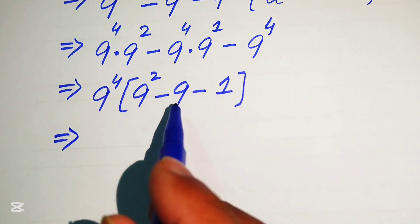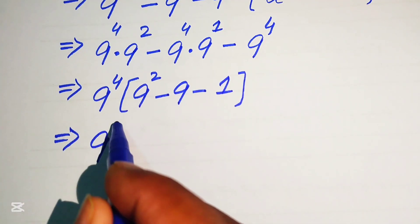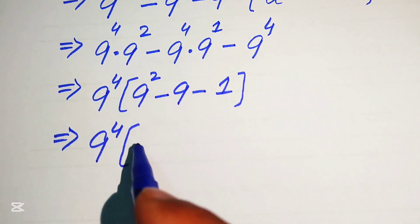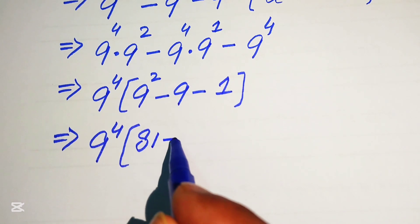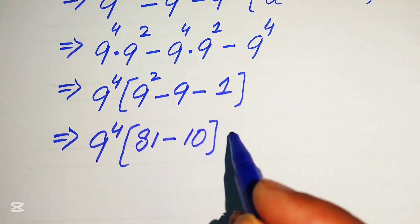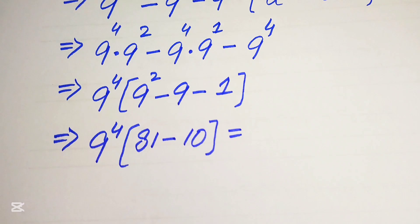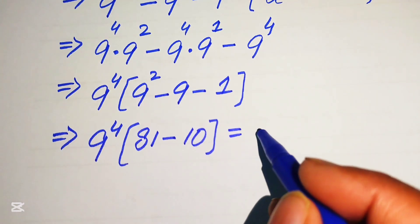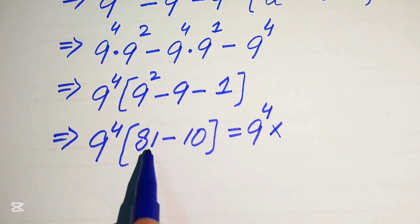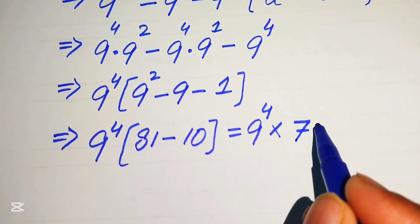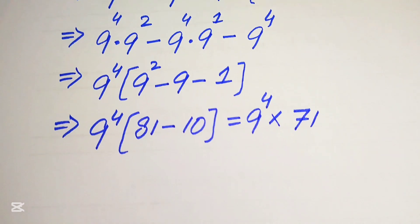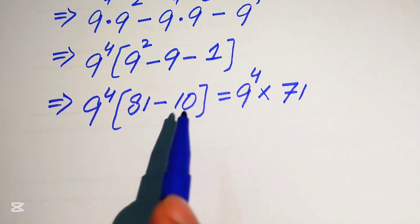In the next step, we rewrite this expression: 9 to the power of 4, and we know that 9 squared equals 81. So the bracket becomes 81 minus 9 minus 1, which equals 71. We write this expression as 9 to the power of 4 multiplied by 71.